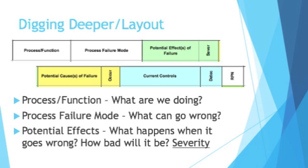The first thing you'll see on an FMEA is the process and function — so what are you doing? Are you pressing something, welding something, screwing a bolt into place? Then the next important thing is the process failure mode: what goes wrong in the process, and how does it fail?